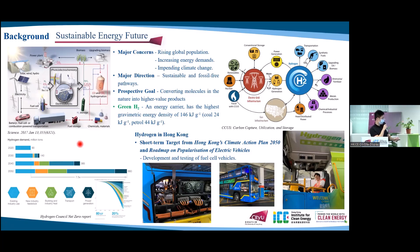According to the forecast of the Hydrogen Council to reach net zero emissions in 2050, we need to produce hydrogen that is about 660 million tons, which is 7.5 times that in 2020. On this basis, hydrogen could prevent 80 gigatons of carbon dioxide emissions in 2050. According to the hydrogen development in Hong Kong, from the Hong Kong's Climate Action Plan 2050 and the roadmap of popularization of electric vehicles, the short-term target is to develop and test fuel cell vehicles.